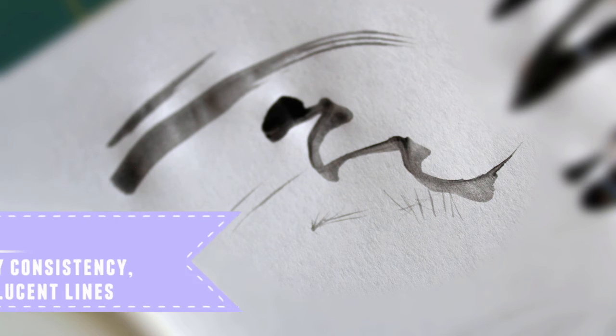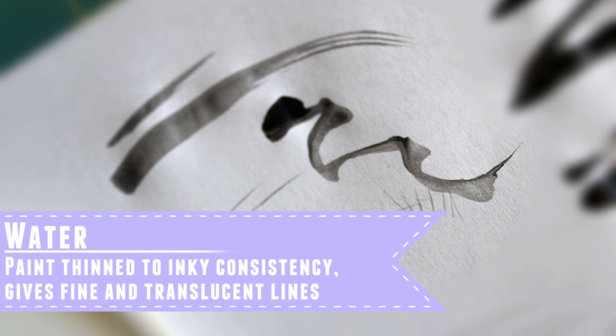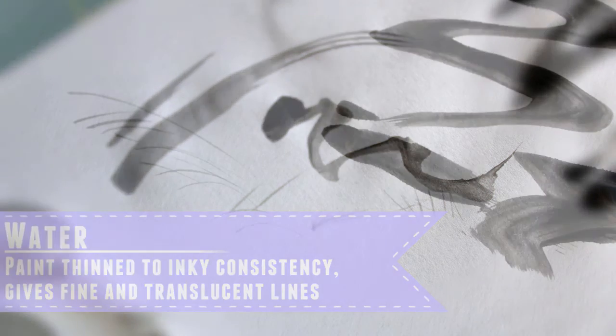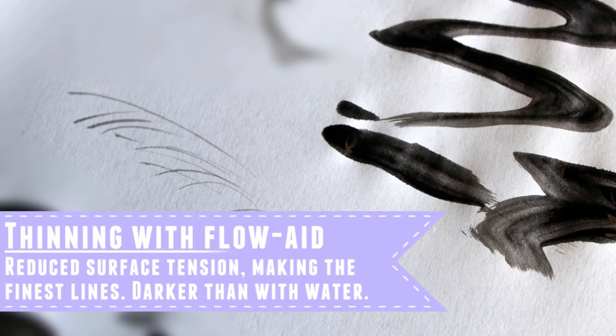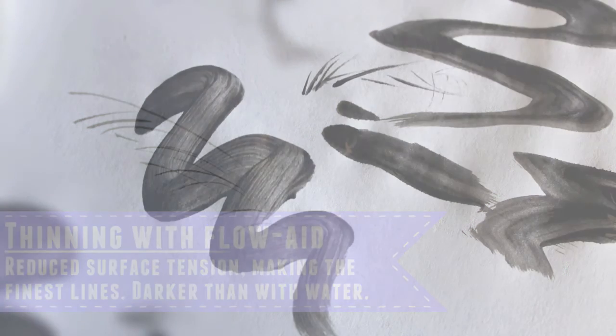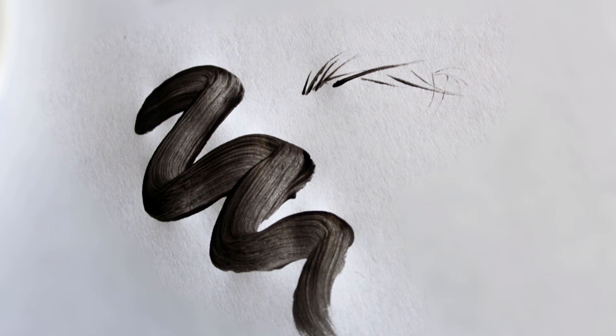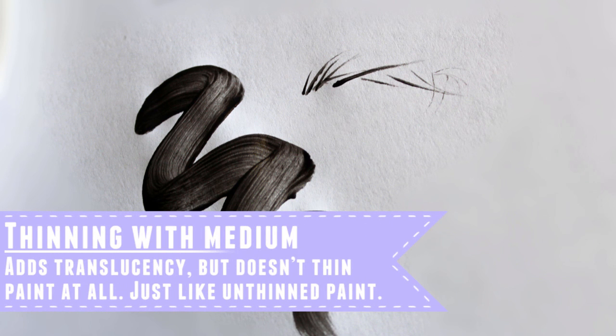So for a quick recap, water is a great all-around thinner but Flow-Aid gives finer lines and more intense color. Medium will increase opacity and slow down drying times but it doesn't actually thin paint, so it's best kept for other purposes.